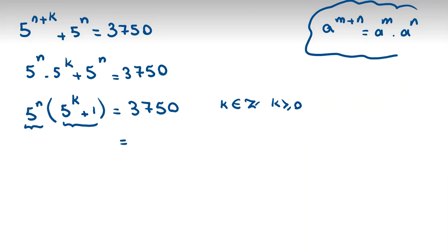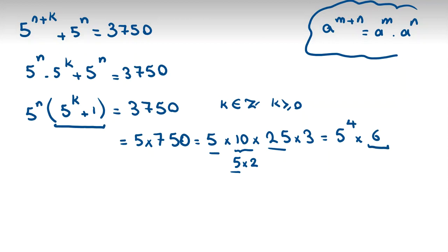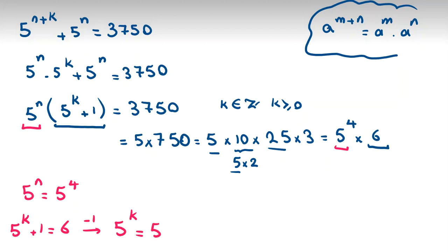Prime factorizing 3750: dividing by 5 gives 750, then 150, then 30, then 6. So 3750 equals 5^4 times 6. Matching the factored equation, 5^n equals 5^4 and 5^k plus 1 equals 6. From the first, n equals 4. Subtracting 1 from the second, 5^k equals 5, so k equals 1.